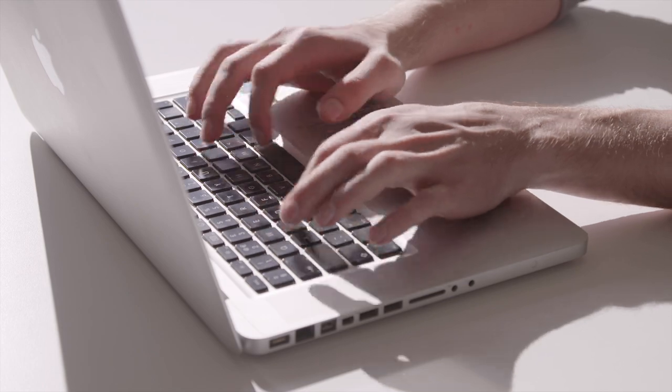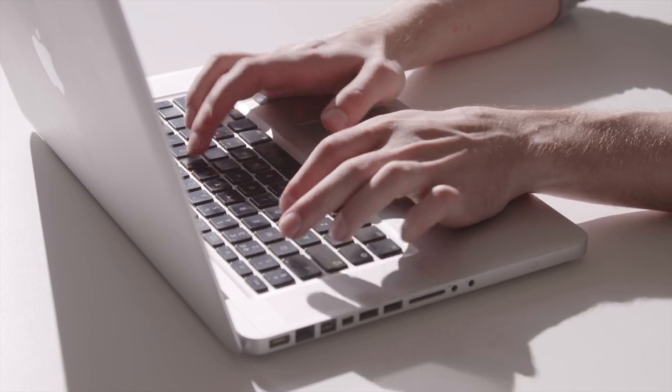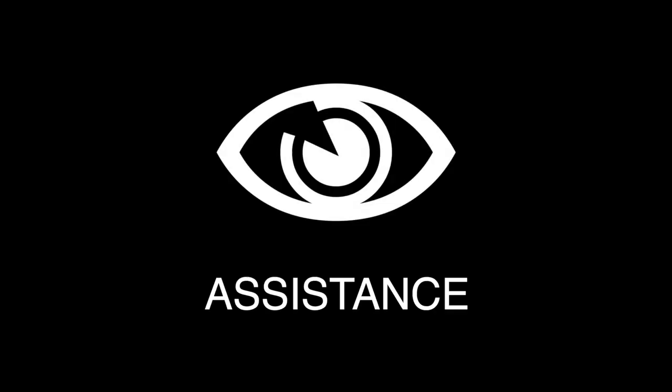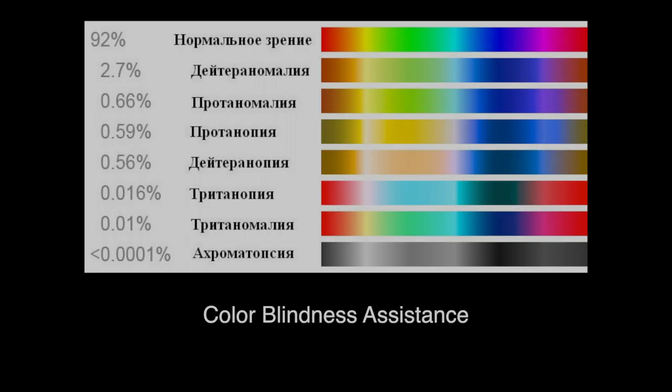While Google has taken strides in accessibility features on their platform, Google Arts & Culture lacks in visual assistance, such as a lack of alternate text for most of its imagery and no colorblindness filters.